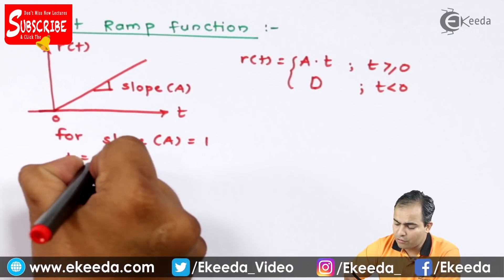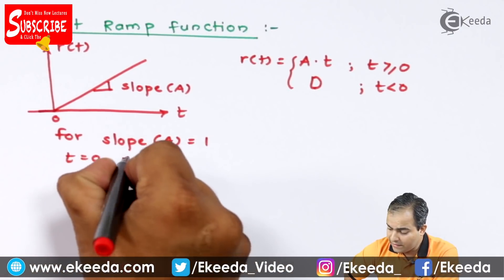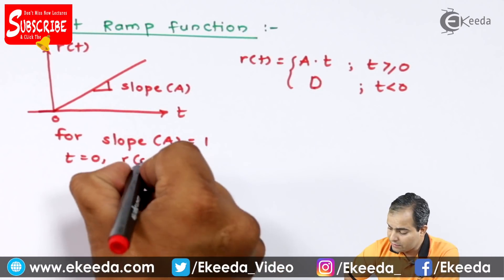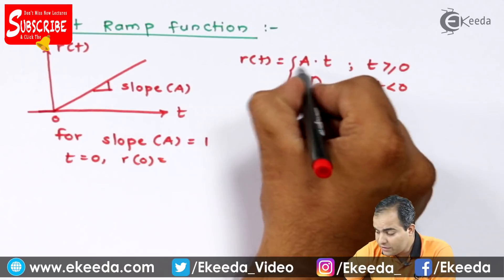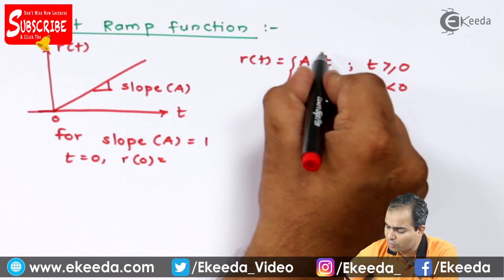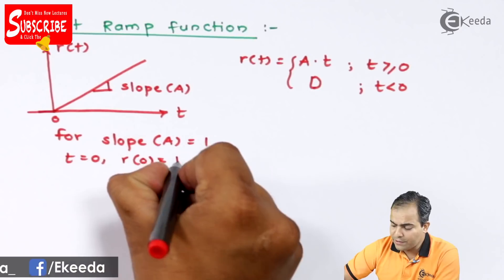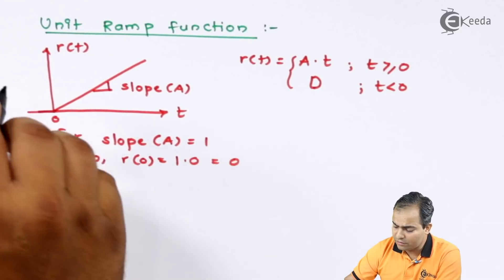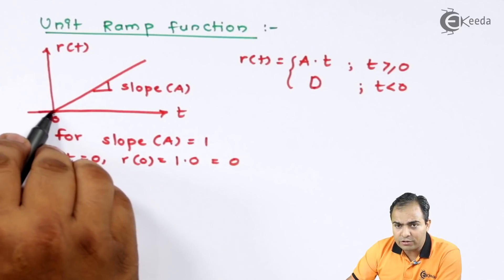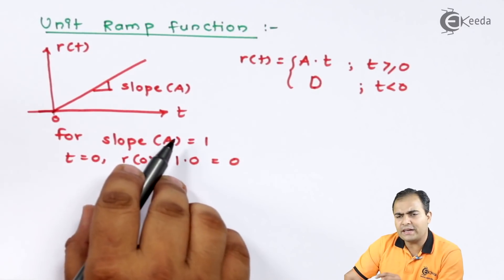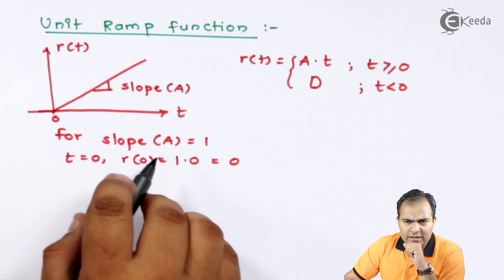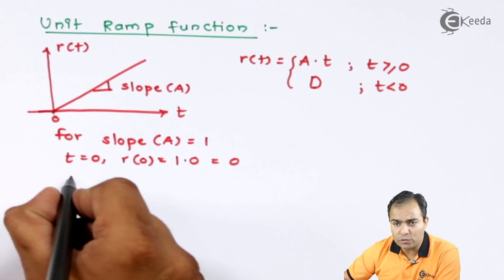For t equals to 0, I have replaced this t value by 0. Similarly, in this function also, this t value also becomes 0. So total product becomes, this amplitude is a and the t value is 0, so total answer is 0. At t equals to 0, if you consider or if you take any value of a, then this graph always produces t value 0.